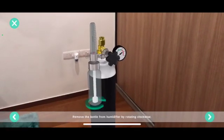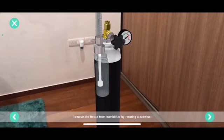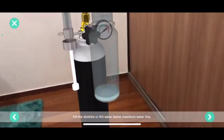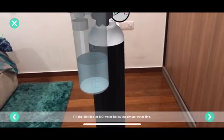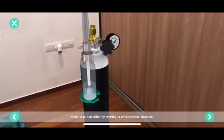Remove the bottle from the humidifier by rotating clockwise. Fill with distilled or RO water below the maximum water line. Attach it to the humidifier by rotating in an anti-clockwise direction.